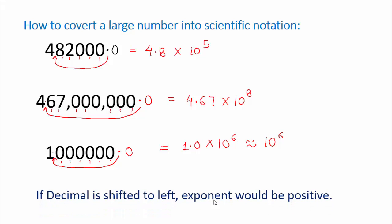So conclusion here is, if decimal is shifted to left, exponent would be positive. Like in all cases you can see, we are shifting decimal to the left direction after first digit. So we are getting here positive exponent.